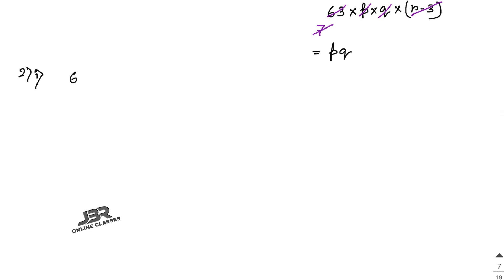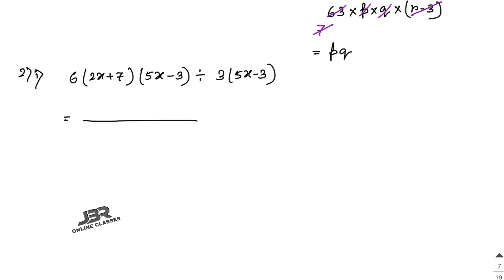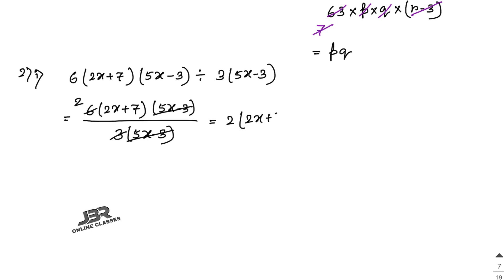Sum number 2, part 1: 6(2x + 7)(5x − 3) divided by 3(5x − 3). Write in fraction form. The (5x − 3) terms cancel out. Then 6 divided by 3 gives 2, so the answer is 2(2x + 7), which equals 4x + 14.